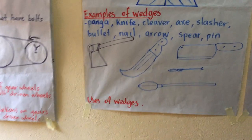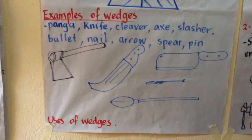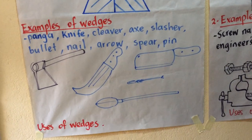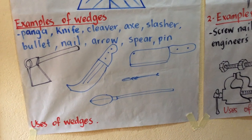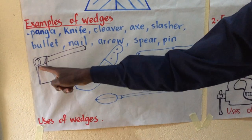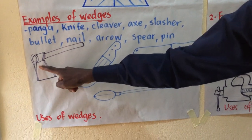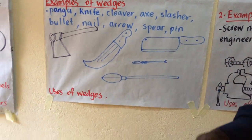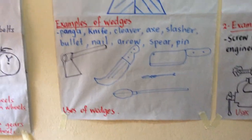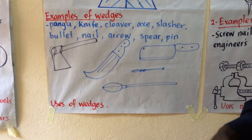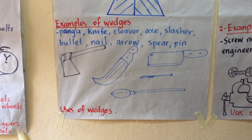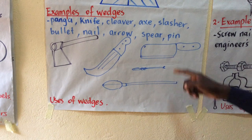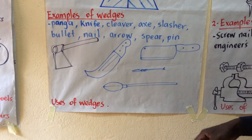We are in corona times, so accessing things is not easy because we are in lockdown. This is the axe with a handle. Sometimes they draw an axe without a handle and ask under which group of simple machines that device falls. There is also a panga, and this is a cleaver — a cleaver is used for cutting meat.